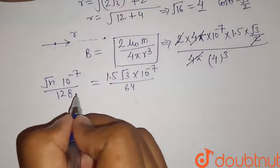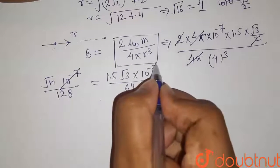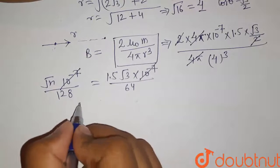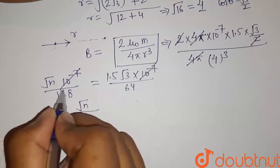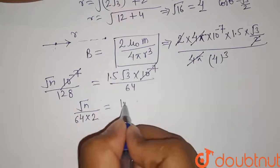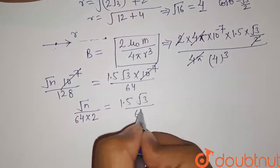So let us try to find the value of n from this equation. Here 10⁻⁷ and this 10⁻⁷ will get cancelled out, and we have √n divided by, this can be written as 64 × 2, is equal to 1.5√3 divided by 64.